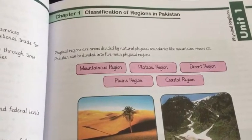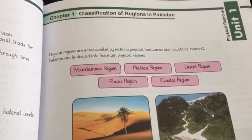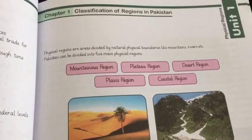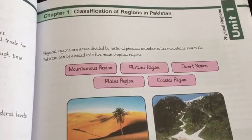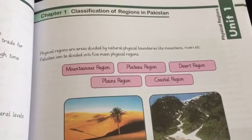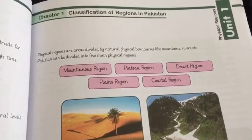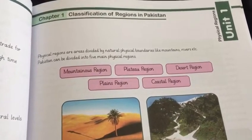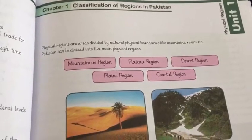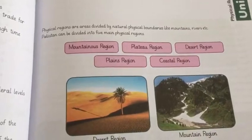Now we will move towards the definition of physical regions. Physical regions are areas divided by natural physical boundaries like mountains, rivers, etc. Natural boundaries are those given by nature.